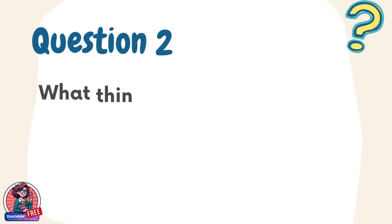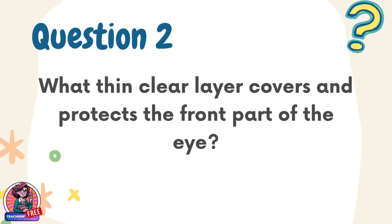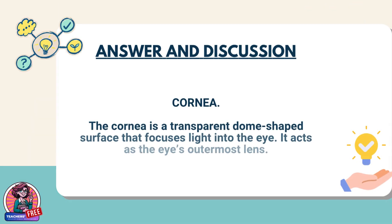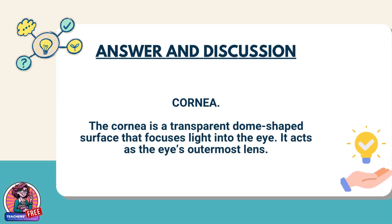Question 2. What thin clear layer covers and protects the front part of the eye? Answer: Cornea. The cornea is a transparent dome-shaped surface that focuses light into the eye. It acts as the eye's outermost lens.